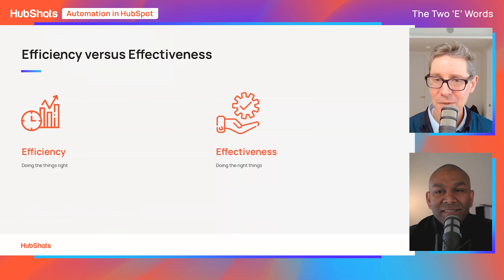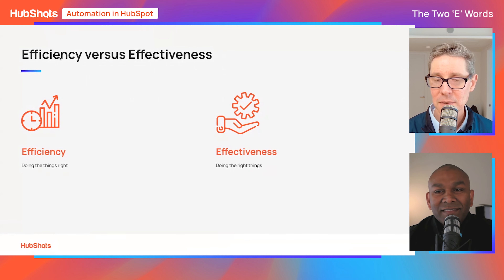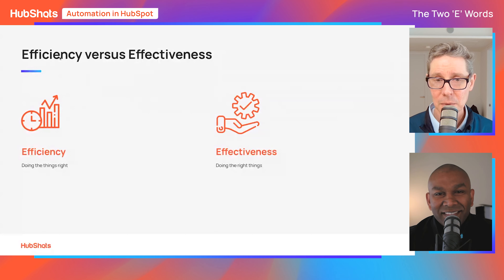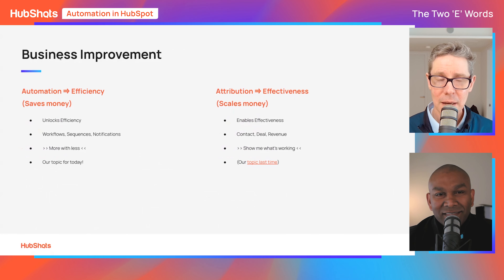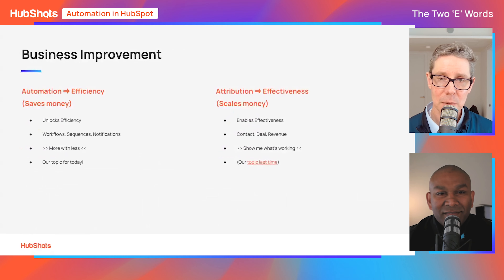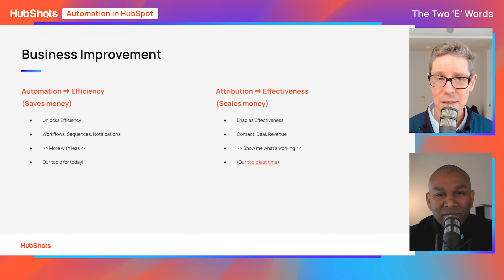Let's define those words. Efficiency is doing things right. Effectiveness is doing the right things. It's great to be efficient and quick, but if you're doing the wrong thing, that doesn't help anyone. The problem right now is people are so caught up just trying to get things efficient again that they are blocked from doing effective work. Automation in HubSpot really unlocks efficiency, saves you money, and also provides the foundation for attribution, which provides effectiveness.